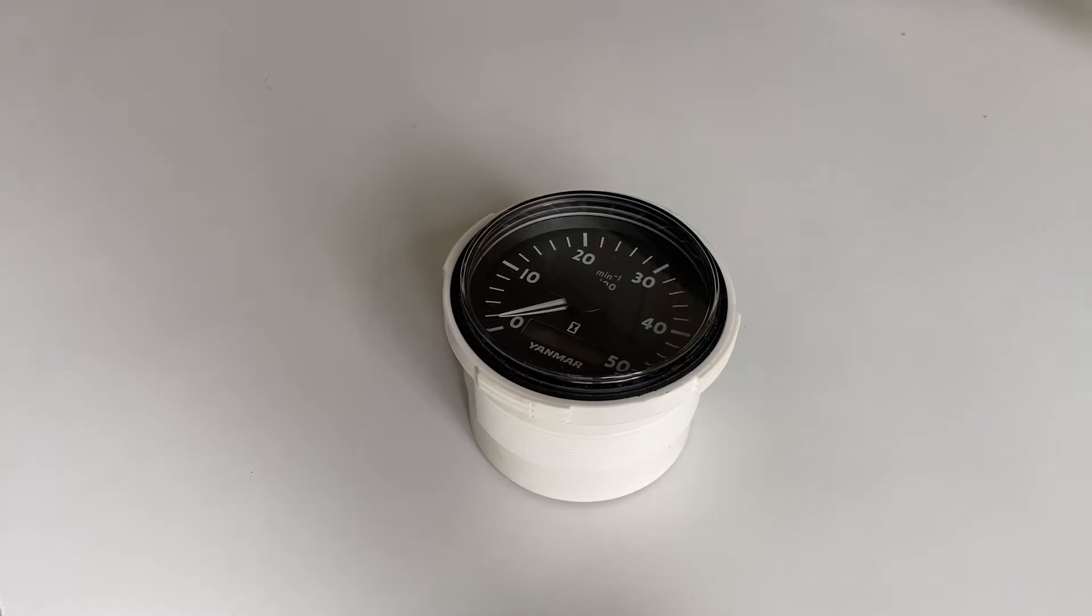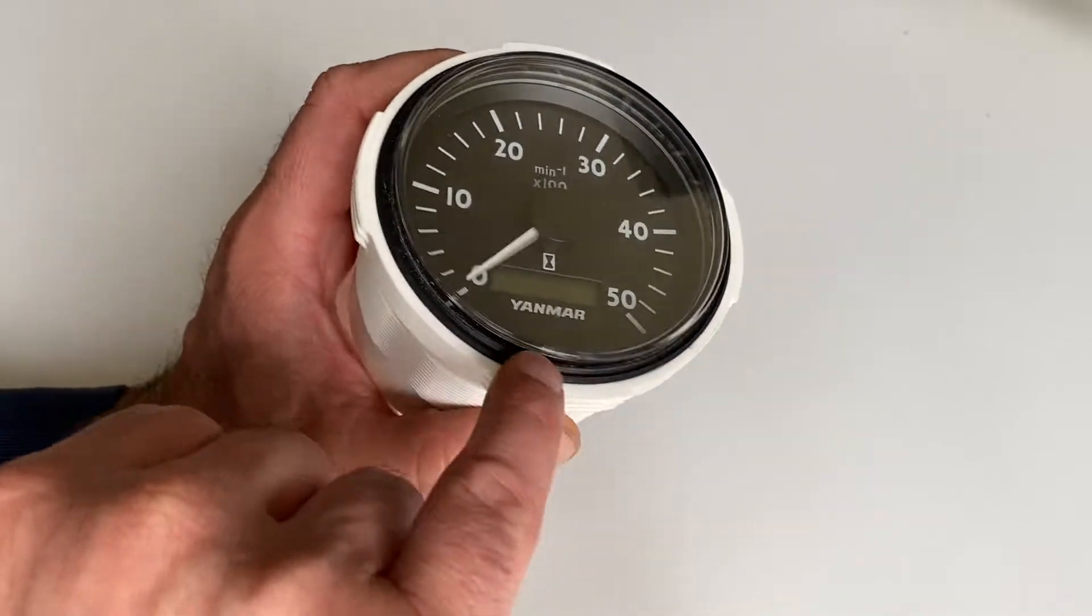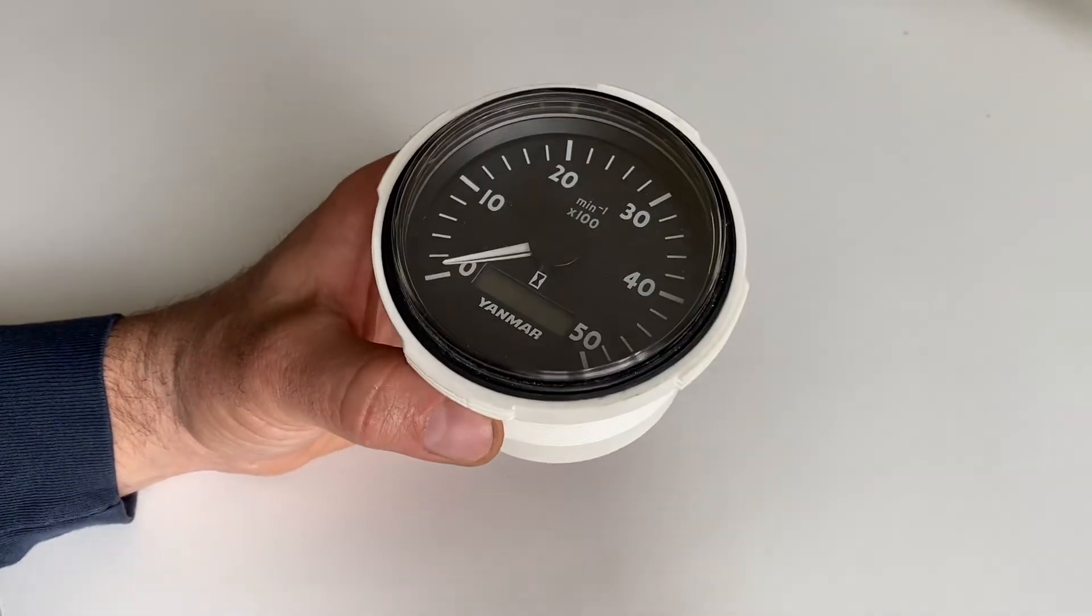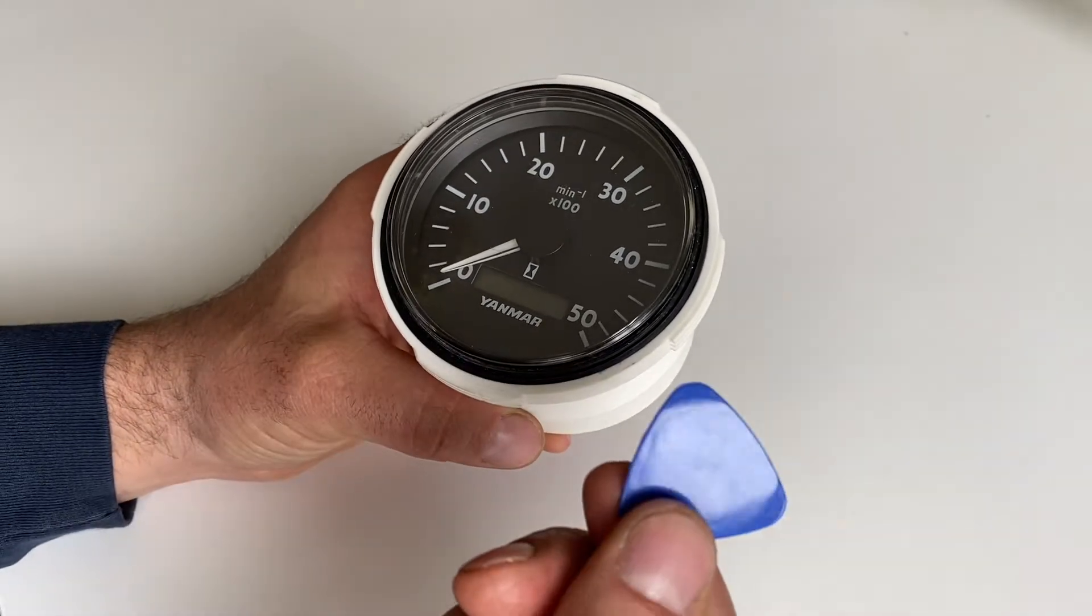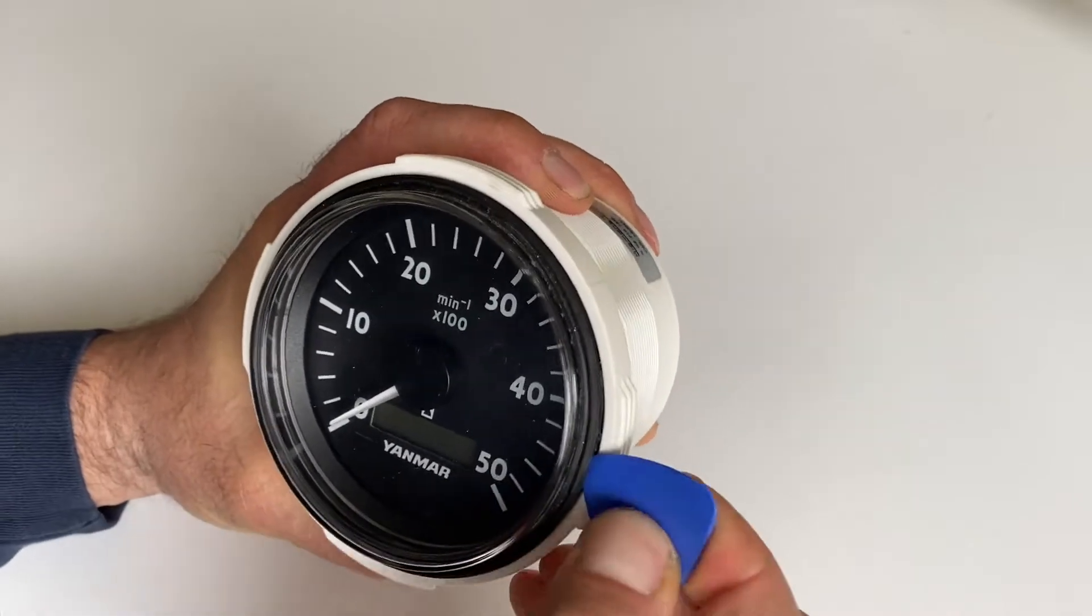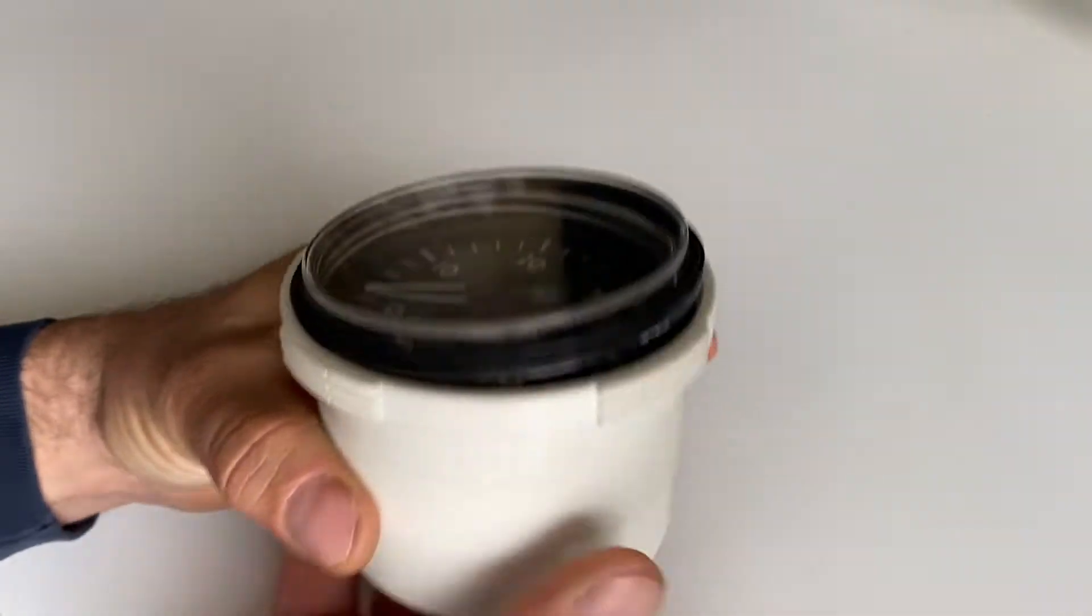Taking the tach apart is quite simple. We have two lenses here surrounded by a gasket. You can use ideally something plastic, something as simple as a guitar pick or a credit card. You'll just lean in here and pry up and you should be able to get it to separate.